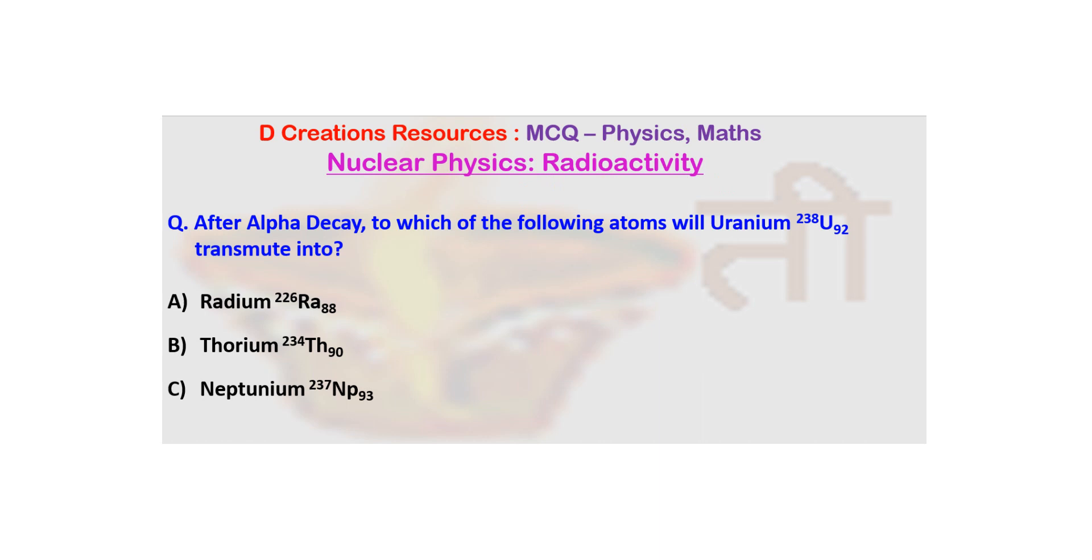Now in our earlier episodes we have tackled questions about ionization power and penetration power. We understood what these are and then looked at the ionization power as well as penetration power of the three most common emissions, namely alpha particles, beta particles and gamma rays. We also saw how alpha particles have the highest ionization power while gamma rays have the highest penetration power.